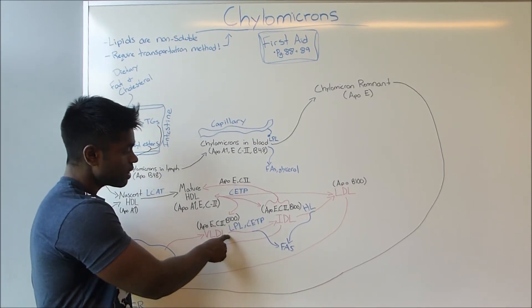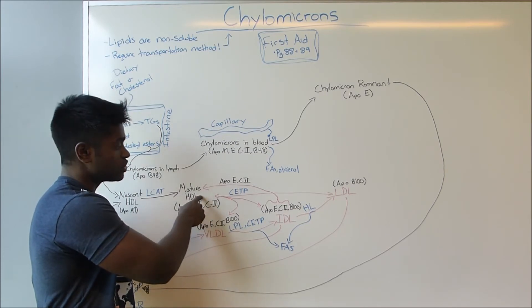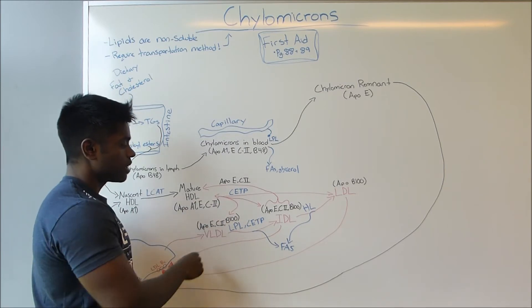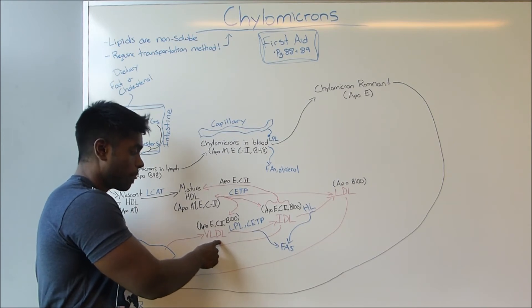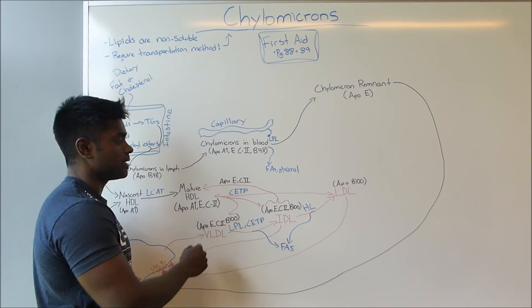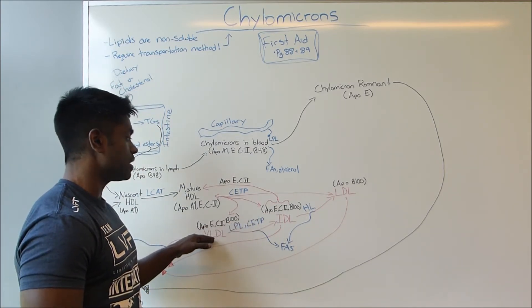In exchange, the HDL gives its cholesterol to the VLDL, causing a decrease in the total triglyceride level in the HDL and the VLDL and an increase in the levels of cholesterol in the VLDL. Therefore we have a different composition of VLDL which is what we call IDL.